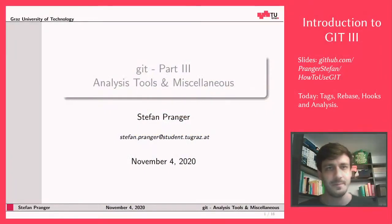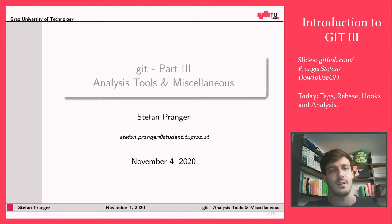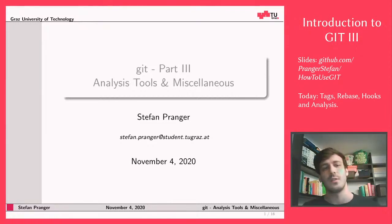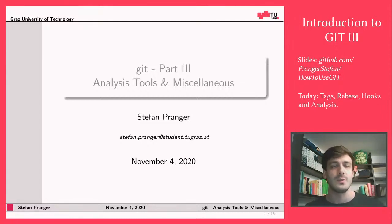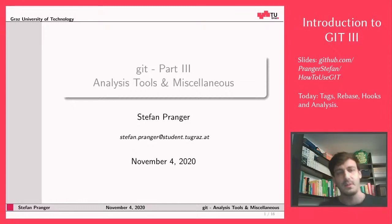Welcome to Introduction to Git, Part 3. Today we're going to talk about some features that are not necessarily core to using git but are quite handy when trying to analyze changes introduced into your code — if you want to know who made which changes, or if you want to trace down a bug or a certain commit.